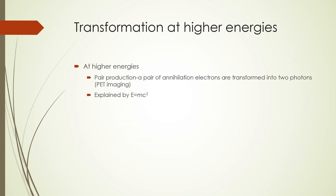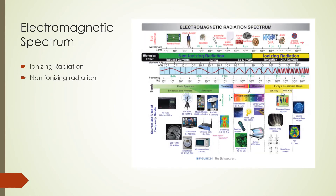Electromagnetic radiation can be transformed at higher energies in a process called pair production. In pair production, a pair of annihilation electrons are transformed into two photons that are emitted at about 180 degrees apart. This is used in positron emission tomography imaging and is explained by E equals mc squared, which is Einstein's famous equation. The spectrum of electromagnetic radiation can be broadly divided into an ionizing radiation portion and a non-ionizing radiation portion.